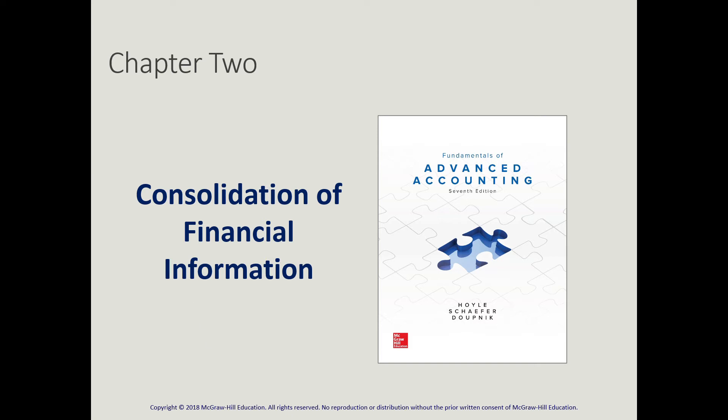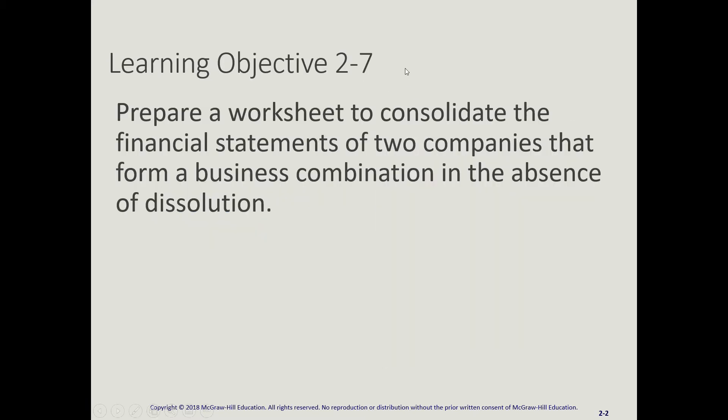Welcome to the last presentation related to Chapter 2 on Fundamentals of Advanced Accounting, Consolidation of Financial Information. We're looking at objective number 7: to prepare the worksheet to consolidate the financial statements of the two companies. Here we're focusing on the scenario where two entities continue to exist and we are going to consolidate the financial statements when we are ready to issue our income statement, balance sheet, and all financial statements for third-party use.